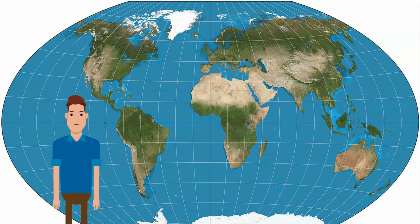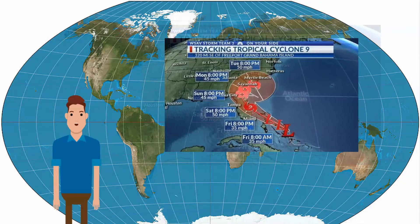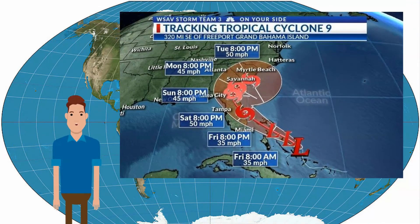Tropical cyclones follow certain pathways driven by global wind circulation. These pathways are known as the cyclone's track. It is possible to follow the track of a tropical cyclone using satellite imagery, as the storms are so large they can be seen from space.